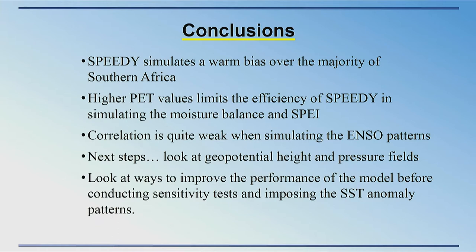To conclude: SPEEDY is generally simulating a warm bias over the majority of southern Africa, which is leading to higher evapotranspiration values. This seems to be limiting its efficiency in simulating the moisture balance and SPEI values, so the correlations are quite weak for the SPEI of the different ENSO patterns. The next step is to look at geopotential height and pressure fields to identify which teleconnections aren't being simulated properly, and then possibly explore ways of improving SPEEDY's performance before moving on to the sensitivity tests and actually imposing the SST anomalies.